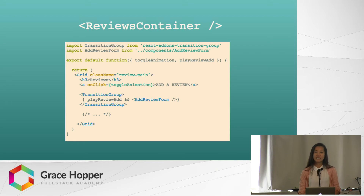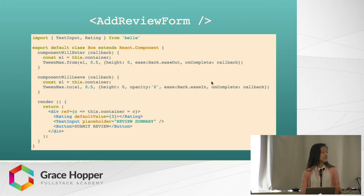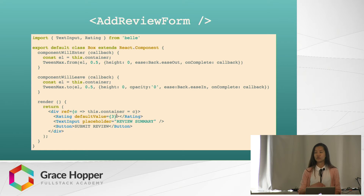What TransitionGroup does is give us very specific lifecycle hooks to be used just for animation. The two we'll be using are componentWillEnter and componentWillLeave, which are called at the same time as componentDidMount and componentWillUnmount. It's in those specific hooks that we determine what we want the element to do as it enters and leaves the DOM. You'll notice the form div makes use of the React ref attribute — that's just a way to save a reference to this DOM element into the variable this.container, which will be useful when we need to directly manipulate the DOM element right after it mounts.